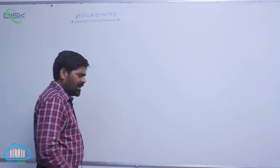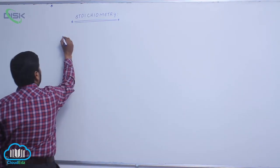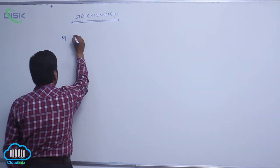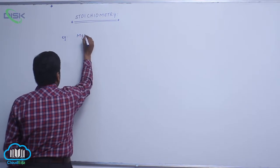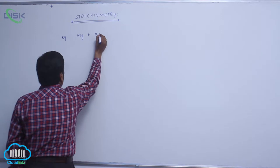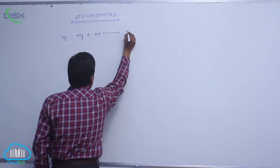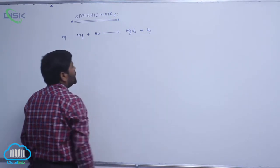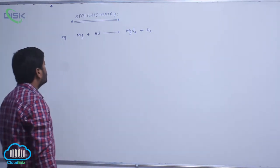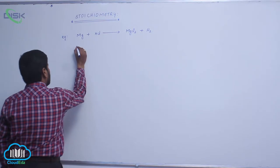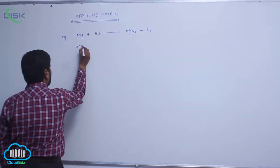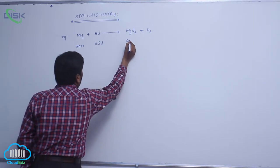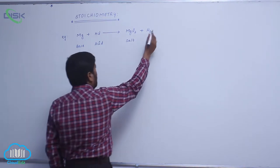For example, a simple example of a stoichiometric equation: when magnesium reacts with hydrochloric acid to form magnesium chloride, H₂ is also produced. It is a base reacting with an acid, so a salt is formed along with the liberation of hydrogen gas.